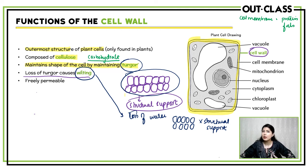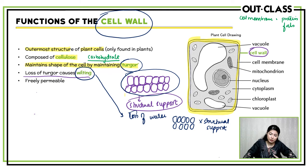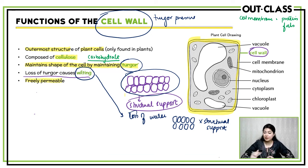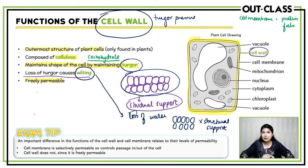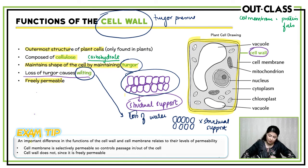We will discuss wilting in much more detail in coming units — don't worry about it. But right now you should know that maintaining turgor pressure is a function of your cell wall. Another very important property of the cell wall is that it is freely permeable. Interestingly, we said the cell membrane is selectively permeable, but your cell wall is not selectively permeable — it is freely permeable. This is an important difference in their functions: the cell membrane controls passage in and out of the cell, but the cell wall does not, since it is freely permeable.